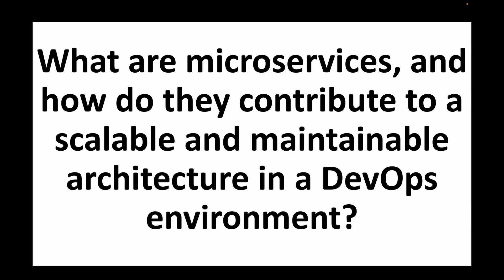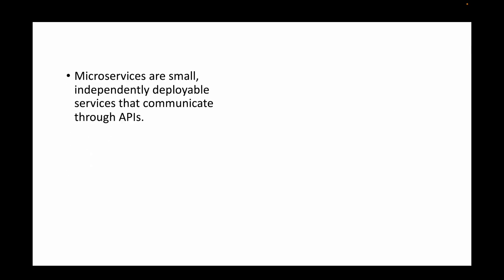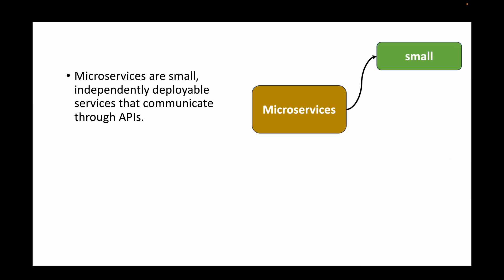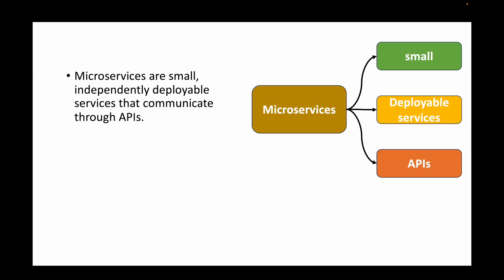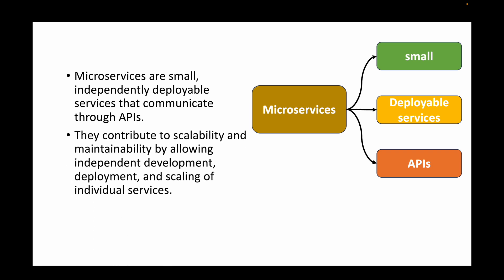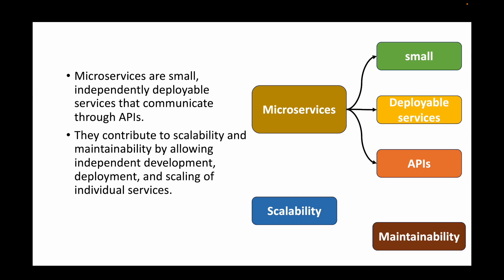The next question is: what are microservices and how do they contribute to a scalable and maintainable architecture in a DevOps environment? Microservices are small, independently deployable services that communicate with each other through APIs. We containerize the application, running them as small services that talk to each other via APIs. This helps with scalability and maintainability, and allows for independent development, deployment, and scaling of individual services, so changes to one service don't require touching the entire application.